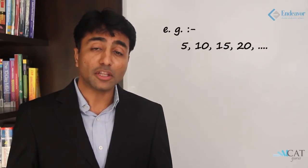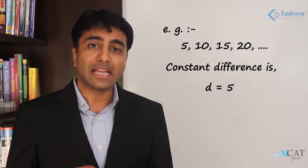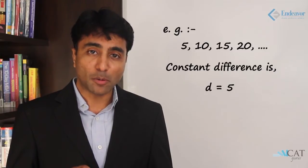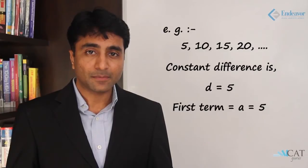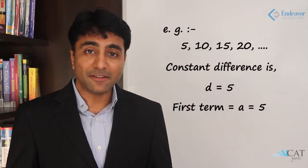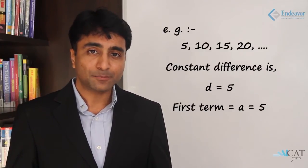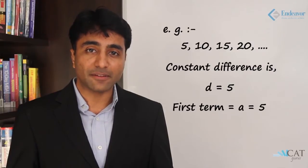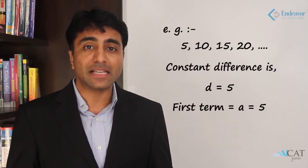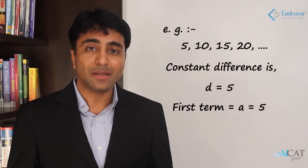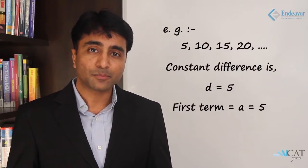For example, in the series 5, 10, 15, 20, the constant difference is 5. Here the first term, popularly known as 'a', is 5, and the common difference, known as 'D', is also 5. Henceforth, 'a' refers to the first term and 'D' refers to the common difference of an arithmetic progression.